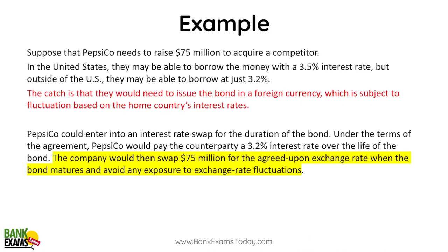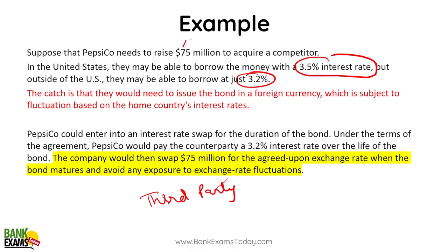Here is a good example: PepsiCo needs to raise 75 million dollars. In the USA they can raise it at 3.5%, and in another country at 3.2% — but in that other country there is currency fluctuation risk. PepsiCo does not want to take that risk. So PepsiCo is going to find a third party and, for the duration of the loan — say one year or five years — PepsiCo will do an exchange of cash flows with that third party. That is a good example of interest rate swaps.